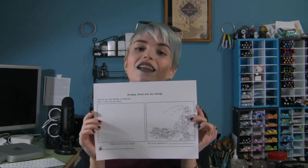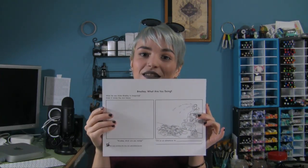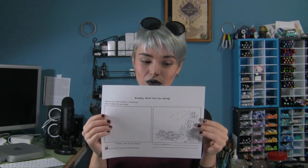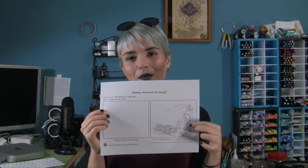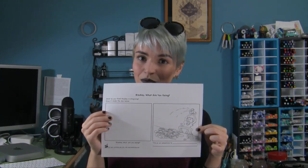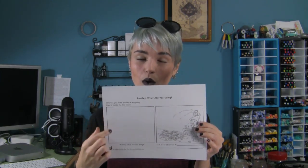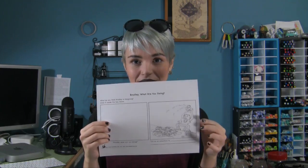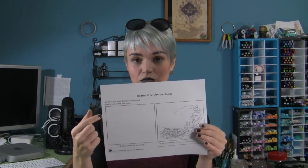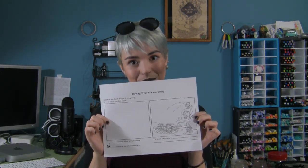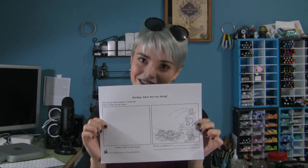So here I have this handy dandy worksheet. How Bradley works is it's based on his imagination versus what he's doing in the real world. Over here we have a picture of Bradley getting into some trouble in the real world, and then you get to figure out what he's imagining in his head based on this picture and you draw it in this box. I'm gonna show you what I thought Bradley was imagining — let's check it out.